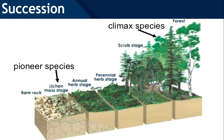Primary succession occurs in an area where there is no existing community. Sometimes new land is formed — as from a volcanic eruption — where in the beginning there are bare rocks with no sign of life, and then slowly a pioneer community comes.